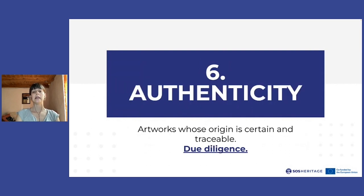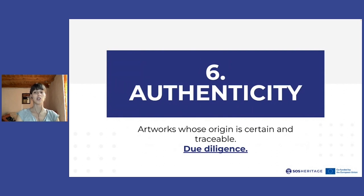A final criterion can be linked to authenticity. The choice is directed towards those artworks whose origin is clear, trustable, and relevant to the history of the museum itself. Archival research and the due diligence process are also useful in this case. Due diligence is a study and research activity that allows the reconstruction of the history of production and of the buying and selling exchanges that took place on the artwork. With this procedure, artworks whose origin is uncertain, or which could even come from illicit trafficking or past war crimes, could be identified.